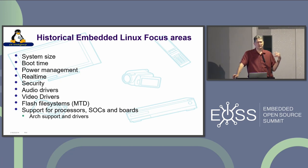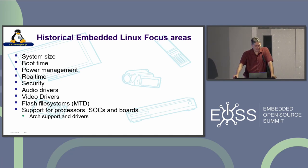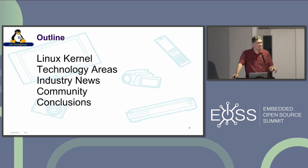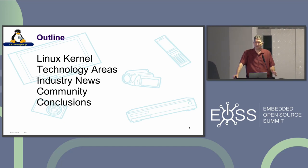These were the historical areas of embedded Linux focus, and I think to some degree we still wrestle with these today: system size, boot time, power management. We'll always have new SoCs with us, so we're always working on new drivers and new boards and architecture support. The major outline here is that I'm going to go through Linux kernel technology, some technology areas, a little bit of industry news, some comments on the community, trade associations, and some interesting use cases. This year I've been focused on space stuff, and then some conclusions.